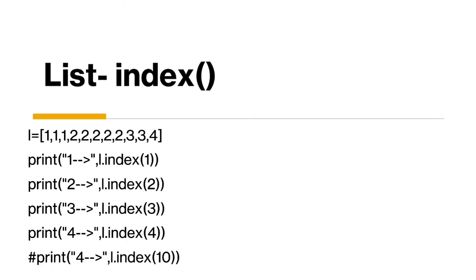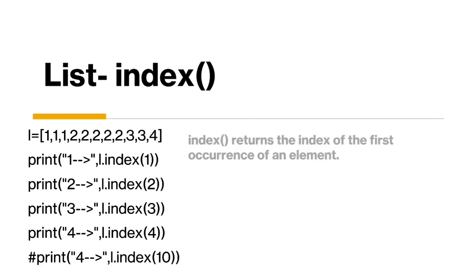The next function is the index function. What index does is it returns the first occurrence of the element — it gives us the index of the first occurrence. So if I call index for element one, it returns zero because one occurs for the first time at index zero. For element two, counting zero, one, two, three — it returns three because two occurred for the first time at index three.